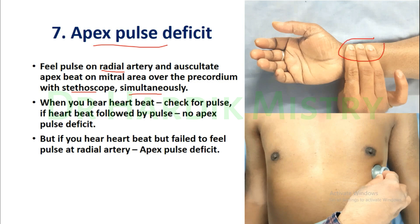While feeling the Radial Pulse, you have to auscultate the Apex beat. The Apex beat area of the Precordium, also known as the Mitral Area, is located in the left 5th intercostal space just inner to the mid-clavicular line, where we are going to hear the most prominent heartbeats with the help of a Stethoscope.